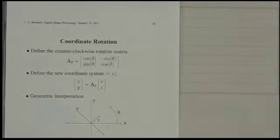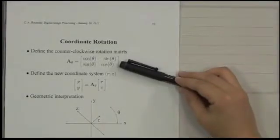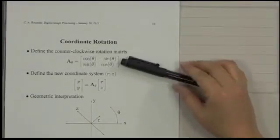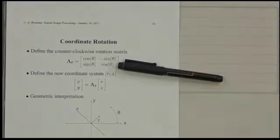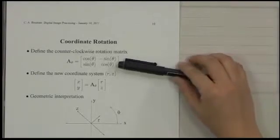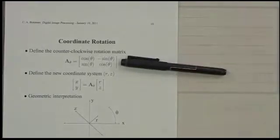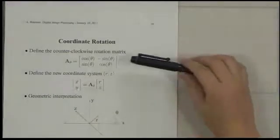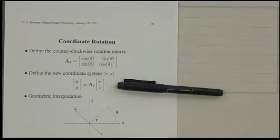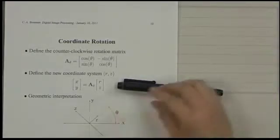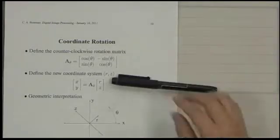Before I introduce the Fourier-Slice Theorem, I want to introduce coordinate rotation. I think most people are familiar with this matrix. We are now on page 10. Professor Bomar finished page 9 last week. This is the counter-clockwise rotation matrix. We define the new coordinate system [r,z]. What does this mean?